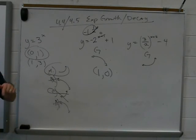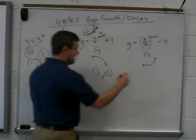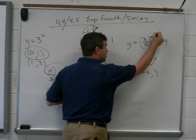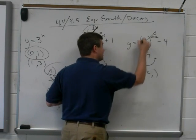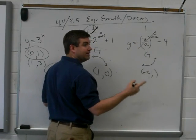Now what point would be the best point to plug in to make life easy? Negative two. Negative two is a great point. Why? Because it makes all of this become zero. That means all of this becomes one. What's one minus four?